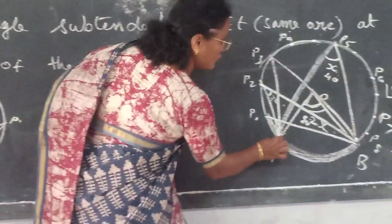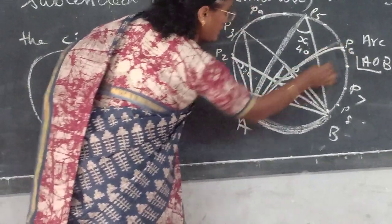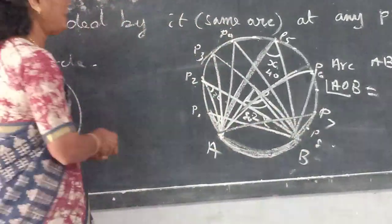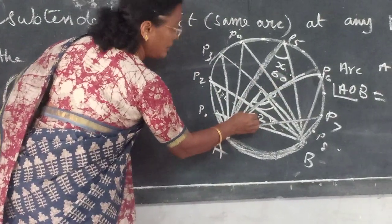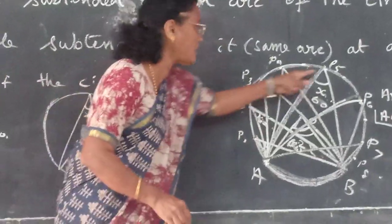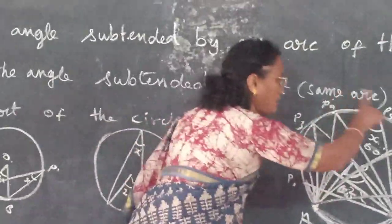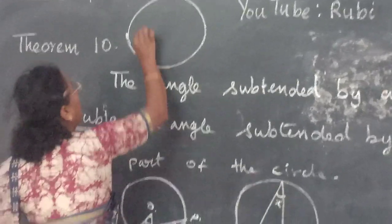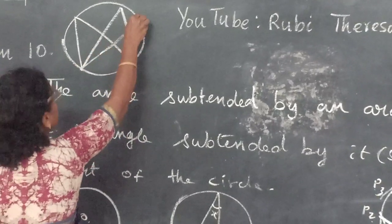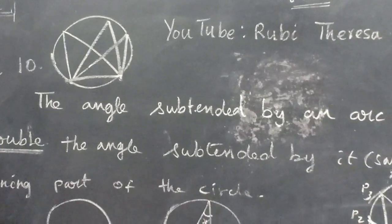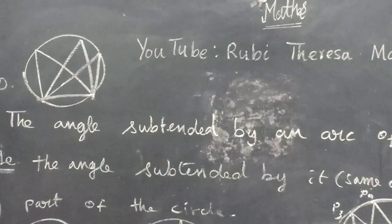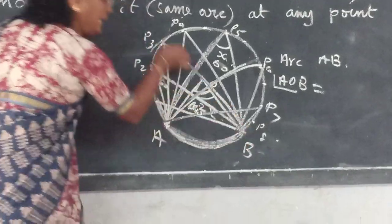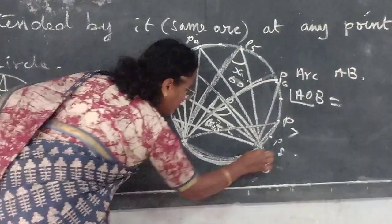Suppose if it is 60 degrees at the center, here you will get 120. These angles are all the same at any point on the remaining part. Angles in the same segment are equal. What is the condition? The same arc should be covered — the arc A, P5, B should be the same arc.